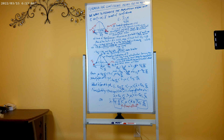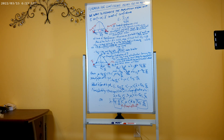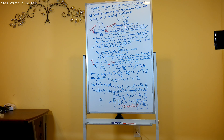We want to estimate the population mean with C, or 1 minus alpha, percent level of confidence. I've drawn the diagram for the standard normal curve. The C level is the confidence level — it is the area in the center of the standard normal curve. If it is a 95% confidence level, that means we'll be 95% confident that the interval will contain the actual population mean.